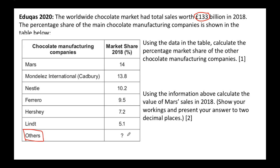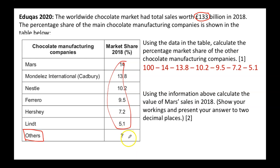All businesses in the world selling chocolate should add up to 100%. So all we need to do is take 100 and minus out the given percentages to find the 'other' value. I get 40.2% for that one.